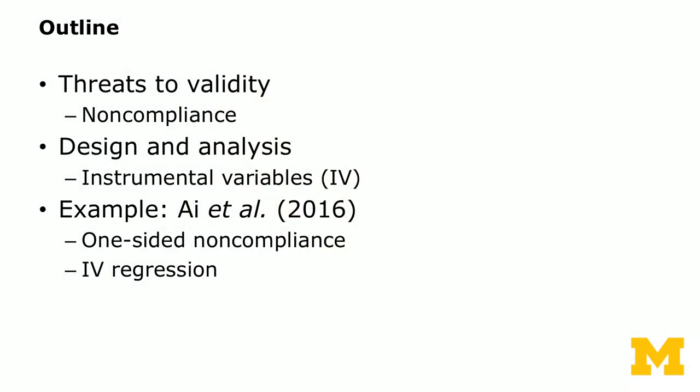We're going to have three units. The first unit covers threats to validity, where we'll define noncompliance and different kinds of noncompliance when you run a field experiment. Then we'll talk about design and analysis to deal with noncompliance using instrumental variables. Lastly, we'll use an example of a field experiment where we encountered noncompliance and used instrumental variable regressions — that's the I et al. paper.